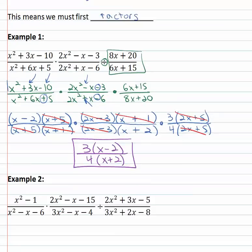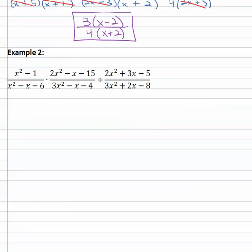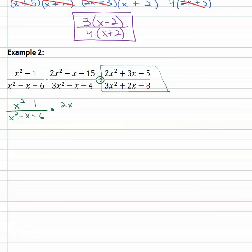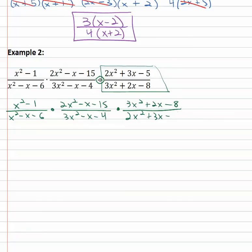Let's try another example where we go through that exact same process: factoring and then reducing. First in this problem you see the division, and we can't do division — instead we're going to multiply by the reciprocal of that second fraction. So everything else stays the same: x squared minus one over x squared minus x minus six, times 2x squared minus x minus fifteen over 3x squared minus x minus four, times the reciprocal which is 3x squared plus two x minus eight over 2x squared plus three x minus five.